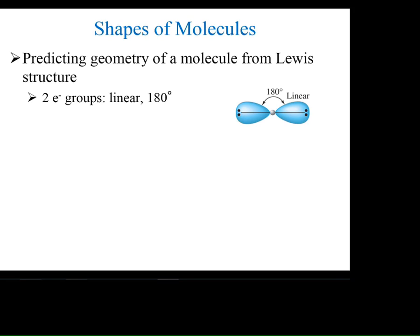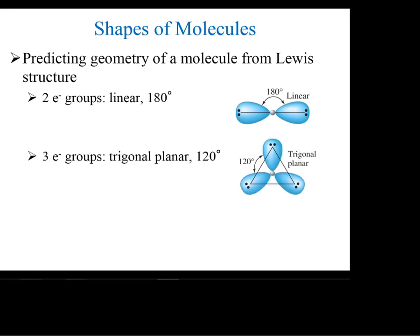What if you have three electron groups? The best way to spread out three things is 120 degrees. We call that trigonal planar because it winds up looking just like a triangle — that's where 'trigonal' comes from. Notice it's all in the plane, so it's called 'planar.' You arrange three things 120 degrees apart, making a big triangle with one electron group on each corner.